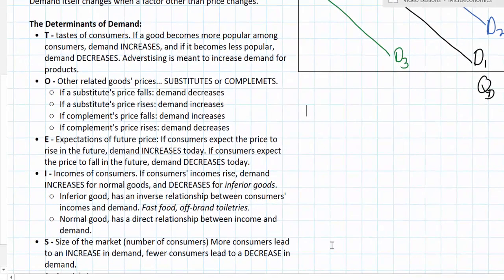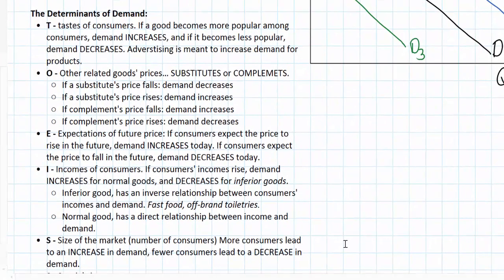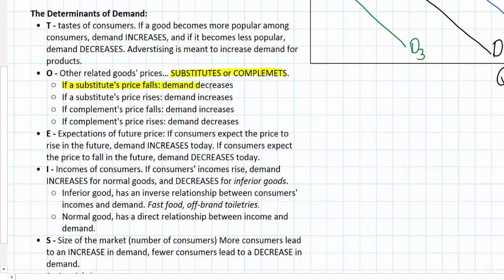The main categories — tastes and preferences of consumers, the price of other related goods, the expectations of future prices, the incomes of consumers, and the number of consumers or the size of the market — are all variables that can cause demand to increase or decrease. It's important to distinguish between substitutes and complements: if a substitute's price falls, demand decreases; if a complement's price falls, demand increases. For income changes, distinguish between inferior goods and normal goods: when incomes fall, demand for inferior goods rises, and demand for normal goods decreases.